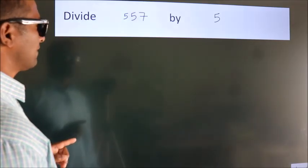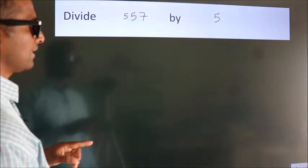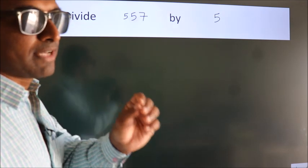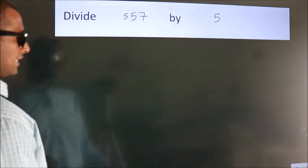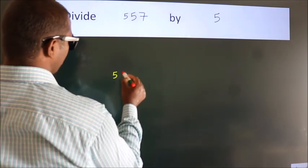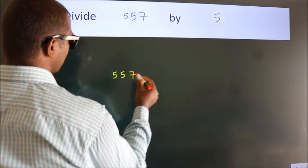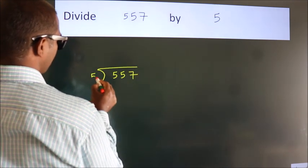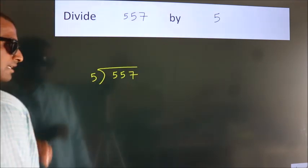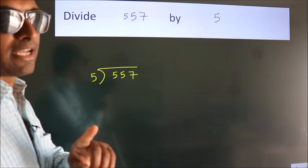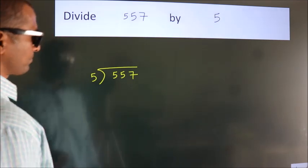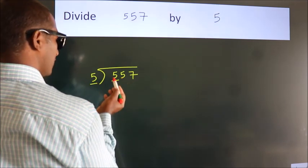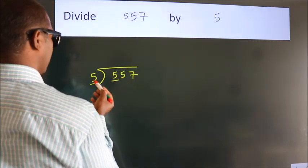Divide 557 by 5. To do this division, we should frame it in this way: 557 here, 5 here. This is your step one. Next, we have 5 here.